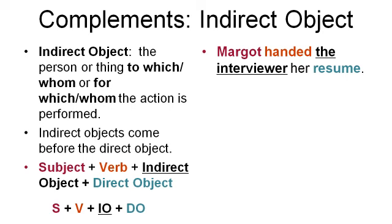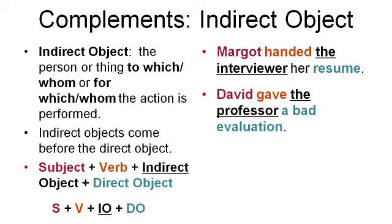Let's look at another example: David gave the professor a bad evaluation. David is the subject. Gave is the verb. What did David give? A bad evaluation. A bad evaluation is the direct object — the thing that was directly given. Now the professor is the person who received the bad evaluation.